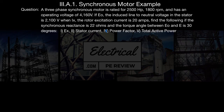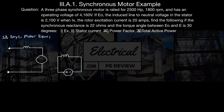First things first, we're going to draw the single-phase equivalent synchronous motor circuit diagram. So here we have our plus supply voltage E minus. Up top we have our synchronous reactance, X of S. Down below, the voltage across the synchronous reactance is going to be plus EX minus. Right here we have our induced stator voltage, EO.